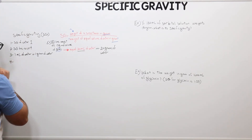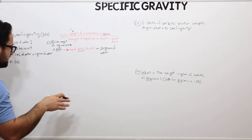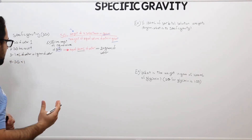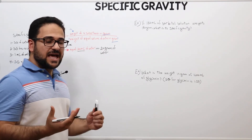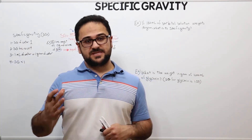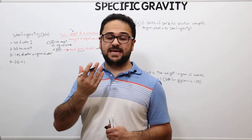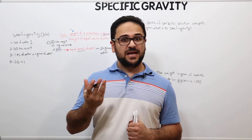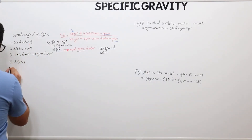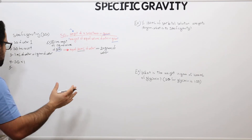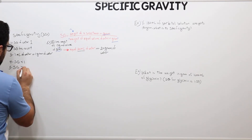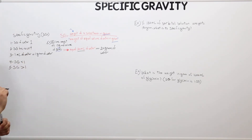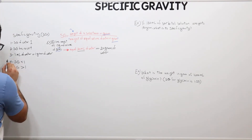Number four: a specific gravity of a substance or object that is less than 1 means that this object or substance is lighter than water. Because the specific gravity of water is 1, if an object has a specific gravity less than 1, it's lighter than water. Number five: if an object or substance has a specific gravity larger than 1, it means it's heavier than water.